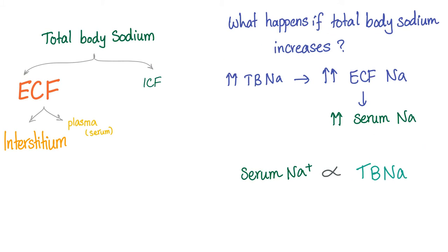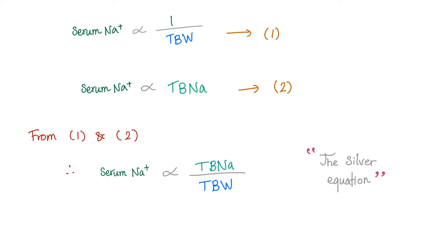Where can we find total body sodium? It's everywhere — in the ECF and ICF — but the majority is in the ECF, which can be in the interstitium or the plasma. If total body sodium increases, ECF sodium increases, and therefore plasma/serum sodium increases. This is a directly proportional relationship. So: serum sodium is inversely proportional to total body water, and directly proportional to total body sodium. Therefore, serum sodium is proportional to total body sodium divided by total body water — we call this the silver equation.